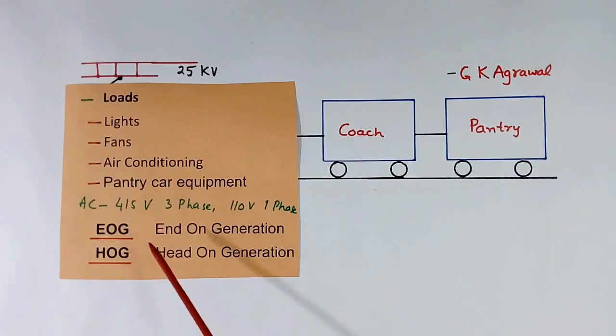To run these loads, there are two methods. One is EOG, End On Generation method. Second is HOG, Head On Generation. Hotel load converter is part of HOG. First I will explain EOG, then I will explain HOG and hotel load converter.